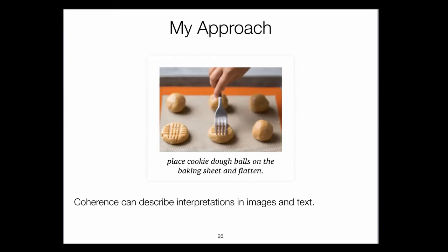I argue that similar to two text spans connected with inferences, images and texts are also connected with different kinds of inferences. For instance in a particular image-text pair, you see temporal links — the image shows the middle of an action and the result of the action described in the text, and the image presents a tool not mentioned in the text. In a sense, the image elaborates on the ways to carry out the action. So coherence relations can also describe interpretations in text and imagery.